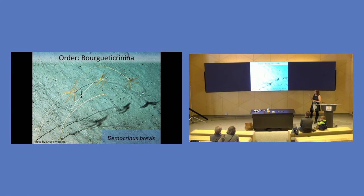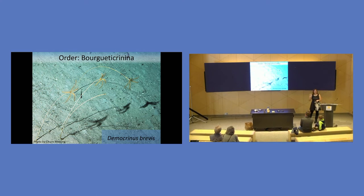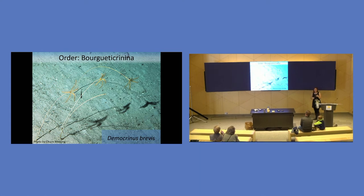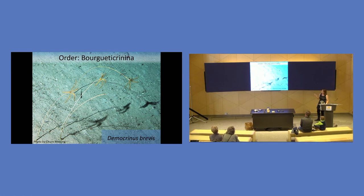But one of the advantages of the order Bourgueticrinida is that they, the ones I'm working on, Democrinus, actually only have five arms, which is really important because if I'm looking for injuries, such as a missing set of arms, I don't want them to have lost those arms because they're doing a crazy crinoid thing and losing an arm and growing back two so they can get more arms. All those pretty ones I showed you earlier that have tons and tons of arms, they'll actually lose one arm, grow back two, lose another one, grow back another two. And that's how they multiply their arms. So I don't want to mistake anything of those sorts of processes for an injury if that's what I'm looking for. So these guys are really great for it.